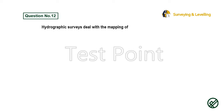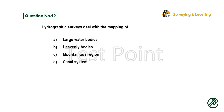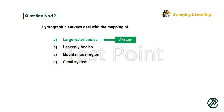Question 12: Hydrographic surveys deal with the mapping of — Option A: Large water bodies. Option B: Heavenly bodies. Option C: Mountainous region. Option D: Canal system. Answer is Option A: Large water bodies.